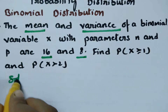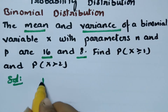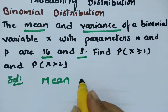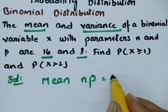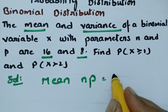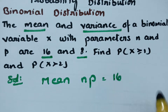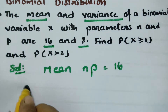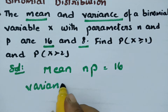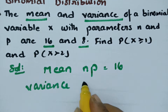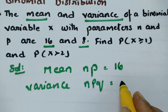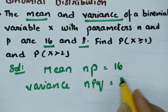In the solution, the mean of the binomial distribution is np, given as 16. This is equation number 1. The variance is npq, given as 8. This is equation number 2.